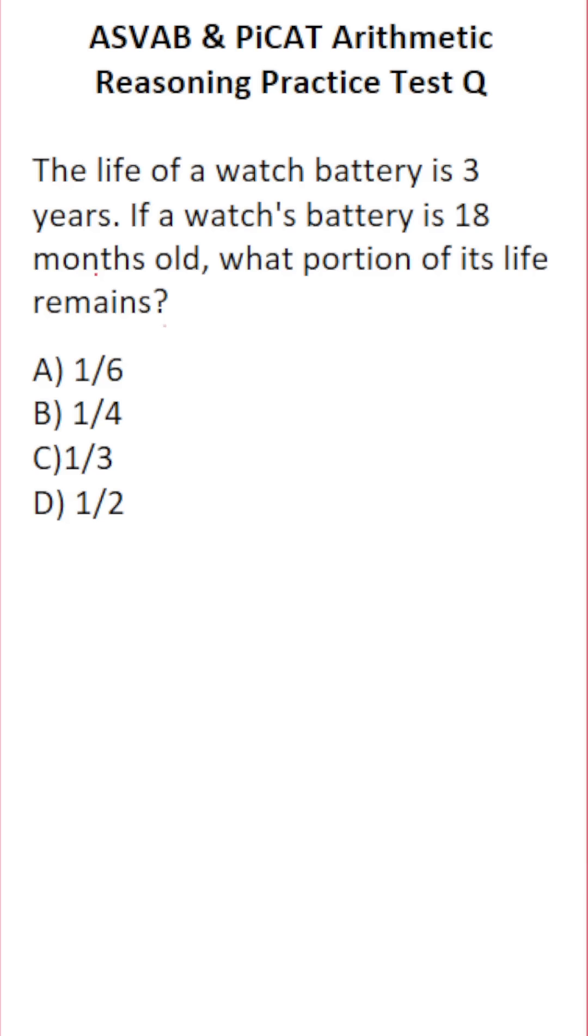So to answer this one, you have to do a small conversion. Specifically, you have to know that there are 12 months in every one year. So if a watch battery lasts for three years, it lasts for 12 times 3, or 36 months.